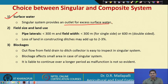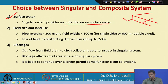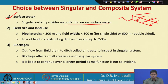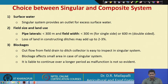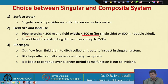The singular system can convey surface water out because the pipeline is open and can collect both surface water and subsurface water. Singular systems handle surface water transport better than composite systems. Regarding field size and land use, pipe laterals should be less than 300 meters and field width less than 300 meters for single-sided and 400 meters for double-sided.